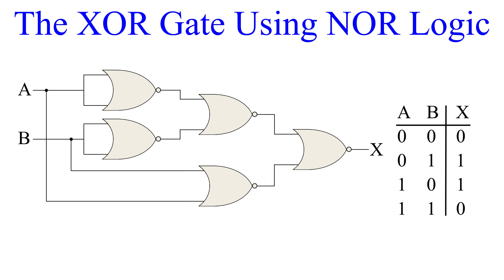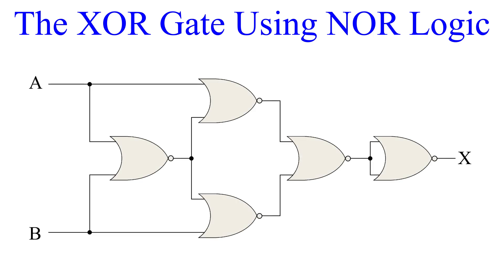Looking at our truth table, we definitely have that of an XOR gate. This isn't the only way to make an XOR gate using NOR gates — there is also a way that is more symmetric. I wanted to show you the other one so that we could make our way through the entire truth table. Notice that it is still the same number of NOR gates. Go ahead and pause the video and work out the logic for yourself if you like.